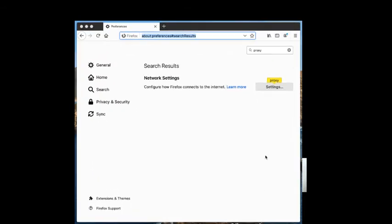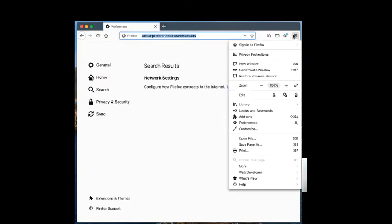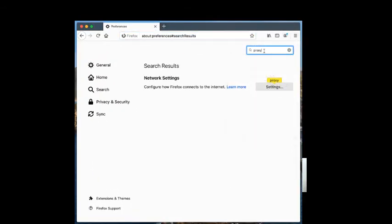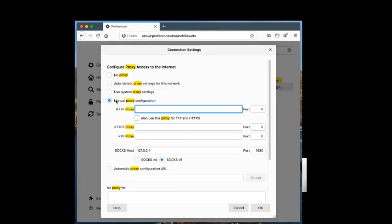In my browser, I can now look for my proxy settings by searching for the proxy settings, and I verify that manual proxy configuration is checked, and that in the host, I have 127.0.0.1, which is localhost, in other words, your own computer, set to SOCKS 5 port 1080.